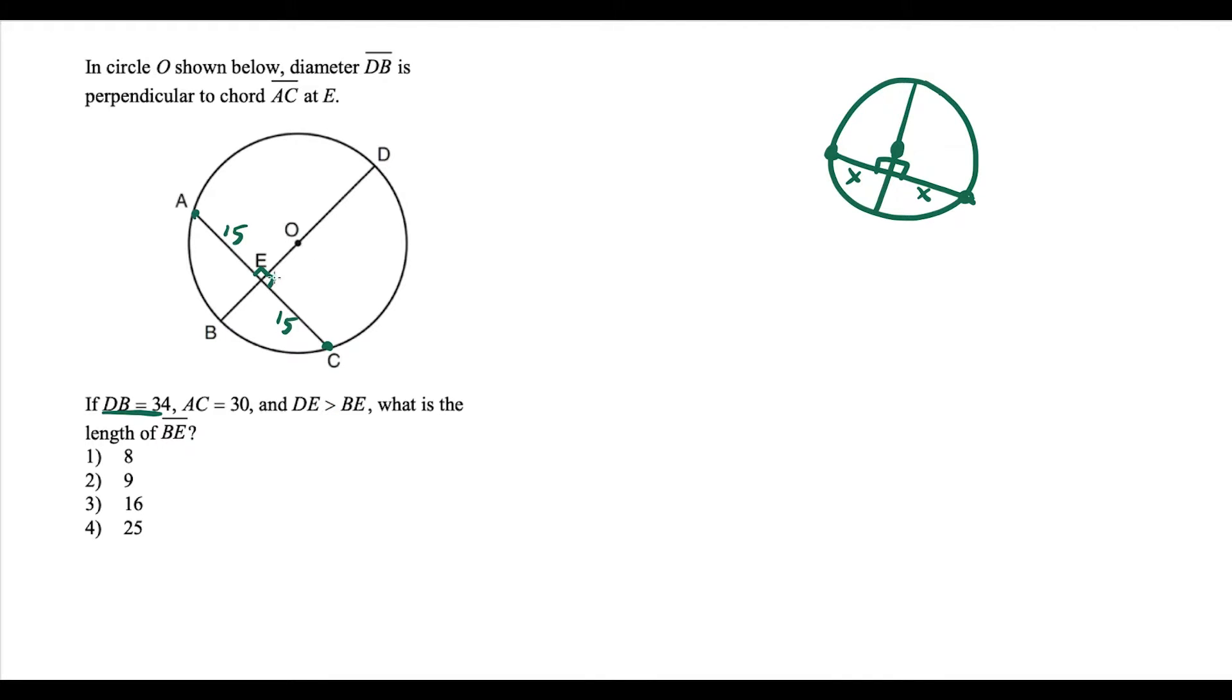And what we could use next is the entire diameter is 34. And the radius, just know the radius of a circle is half the length of the diameter. So if the whole diameter is 34 units, if we take half of that, that tells us any radius that we construct is going to be 17 units long.